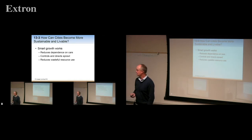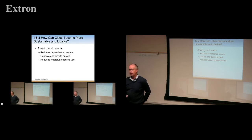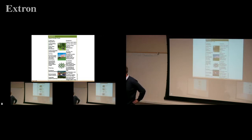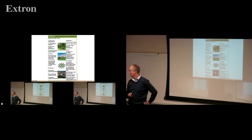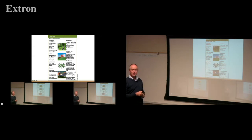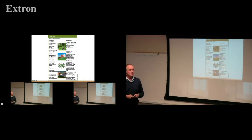How can cities become more sustainable? Basically, smart growth. Key principles: reduce the dependence on motor vehicles, control and direct urban sprawl, and reduce wasteful resource use. Smart growth tools include limiting building permits — some areas near San Luis Obispo are doing exactly that, limiting growth. Zoning is huge: you can only build commercial here, multi-family housing there, residential over there.